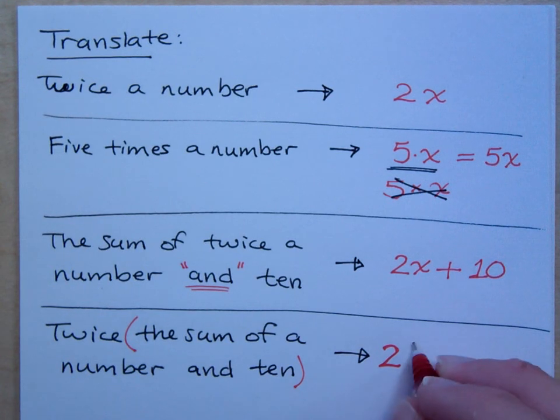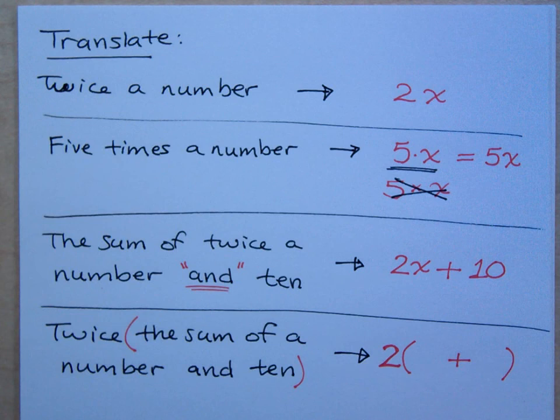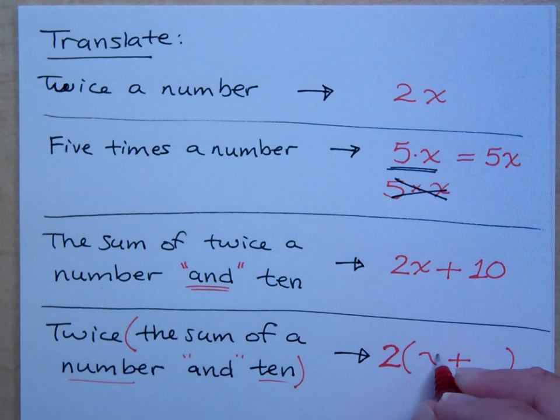So it's twice the sum. It doesn't say twice a number, does it? It doesn't say twice ten. It says twice the sum, and the sum is a group. Because the sum is something plus something else. So this is the sum of what? A number and ten. So that's x and ten.